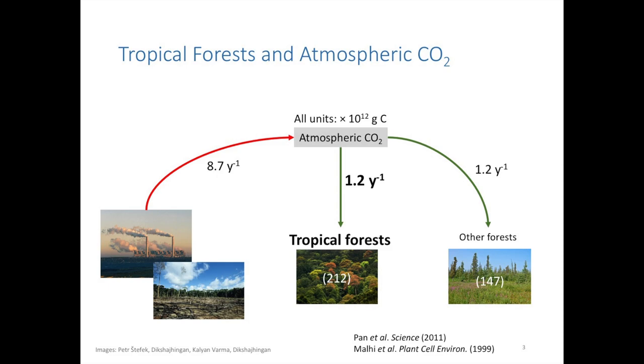Tropical forests are also exceptional in terms of the role that they play in the global carbon cycle. It's been estimated that tropical forests absorb around 1.2 petagrams of carbon from the atmosphere every year and store around 212 petagrams of carbon within their living vegetation, which is as much as if not more than the amount of carbon sequestered and stored by all other forests combined. It's fairly clear that tropical forests play a key role in mitigating climate change by offsetting the carbon being released through man-made sources like fossil fuel combustion and deforestation.